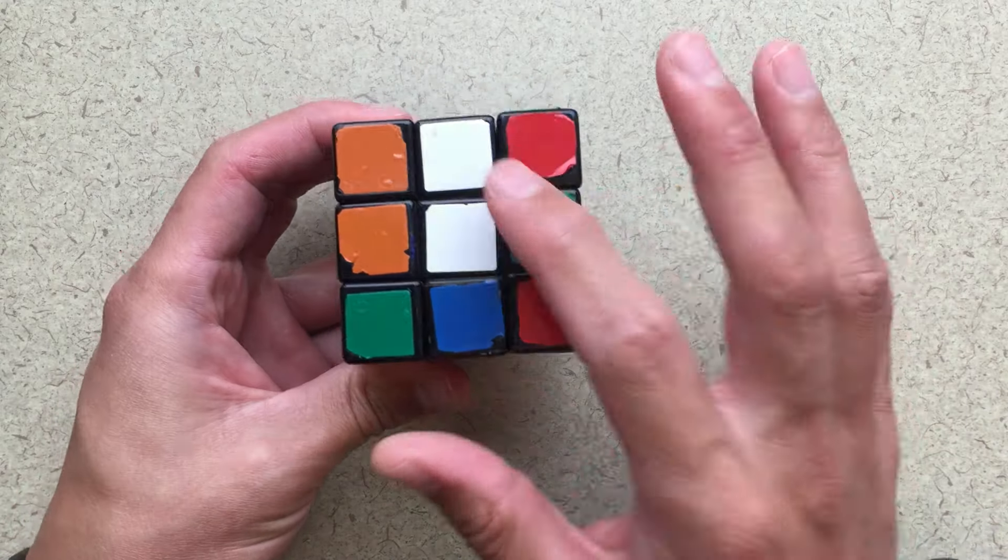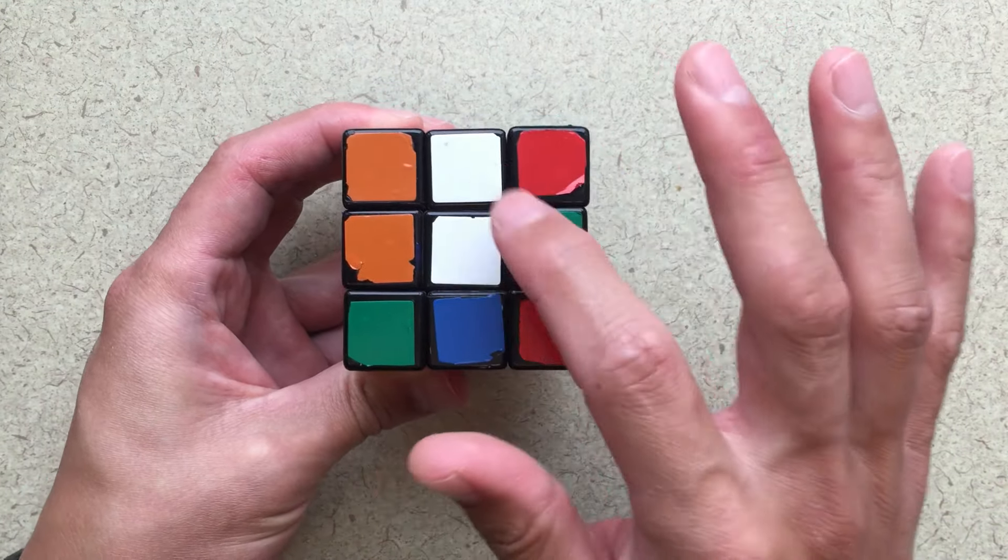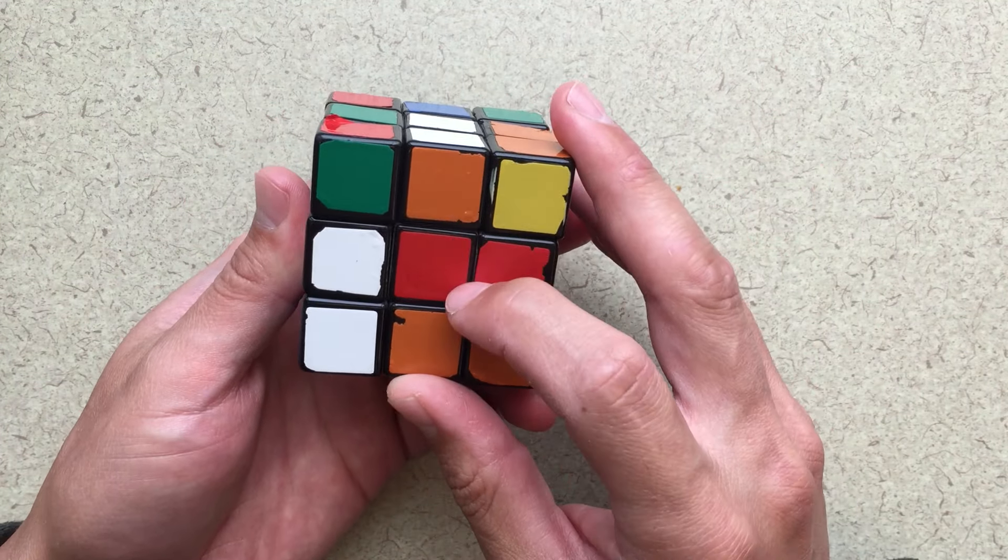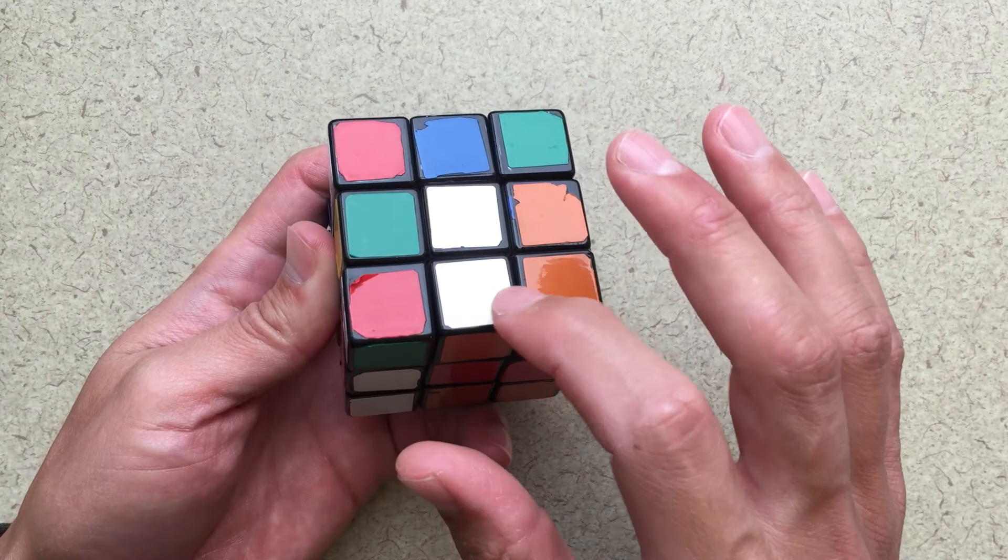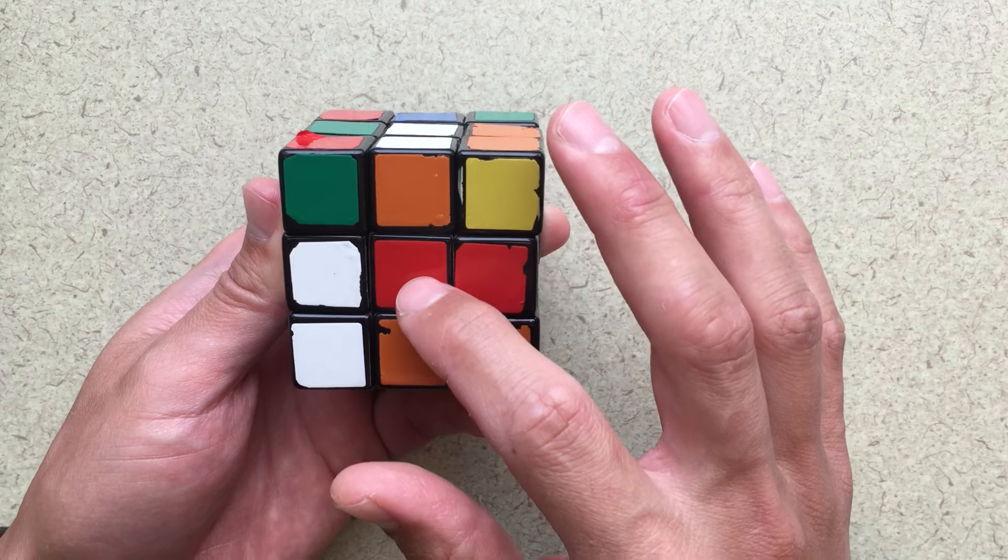So when I mean cross, basically I want all of these five pieces to be white and then also the sides, they need to be the right colors as well. So here I've got this piece is white on the top, but this orange does not match with this red piece here.